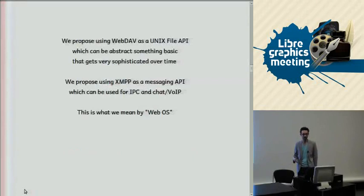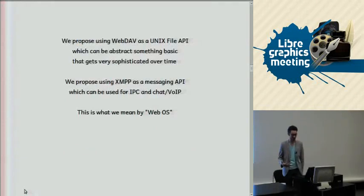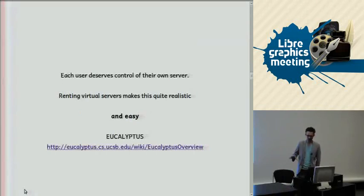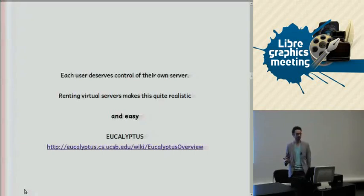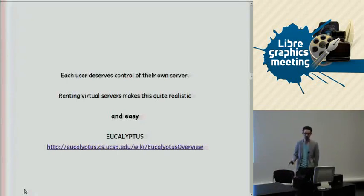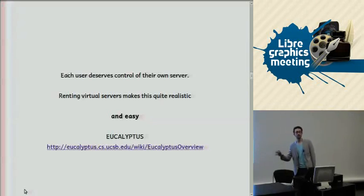We're proposing WebDAV as a kind of Unix file API which we can abstract more complex things behind, and XMPP or Jabber as a messaging API. A common objection is that running your own server is pretty complicated, but that may not necessarily be the case anymore. You've got things like Amazon EC2, so renting a virtual server is now relatively easy and cheap — all the complexity of running a server is taken care of. You're getting complete root control over a system, and you can run whatever software you want on that in a secure and manageable way.